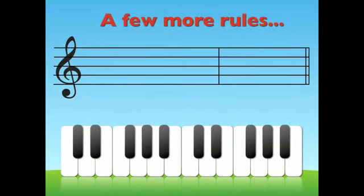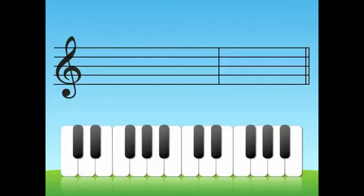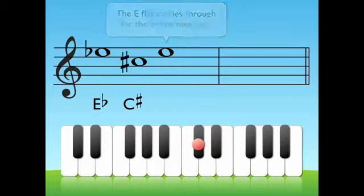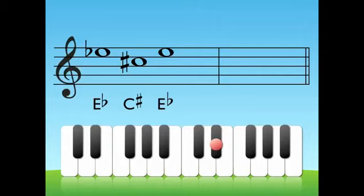Let's practice a little bit more and learn a few more rules. Here's an E flat. And this is C sharp. Now the E flat carries through for the entire measure, so this note is still E flat. And the C sharp has been cancelled by a C natural.